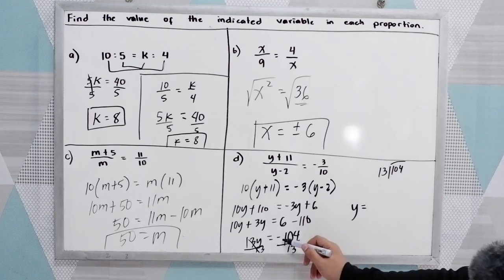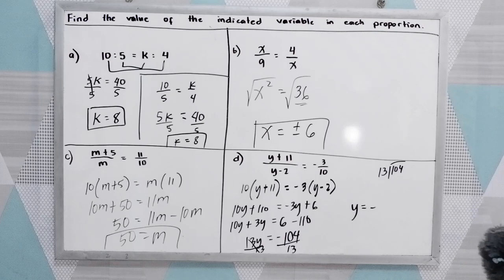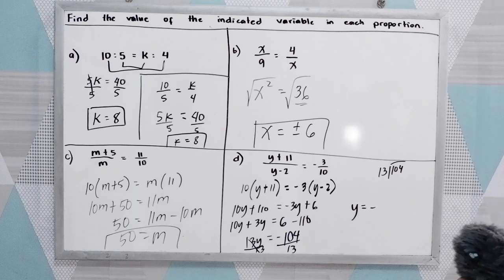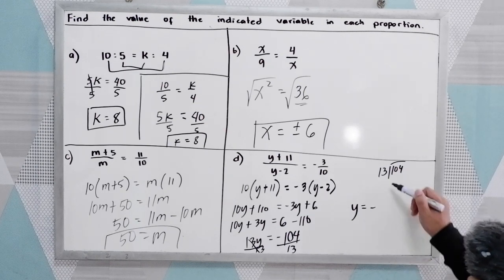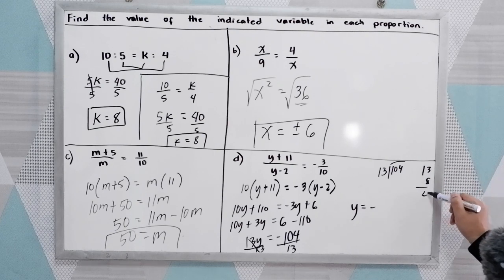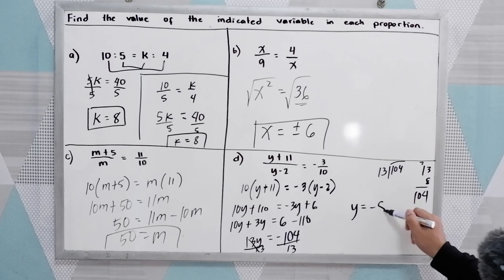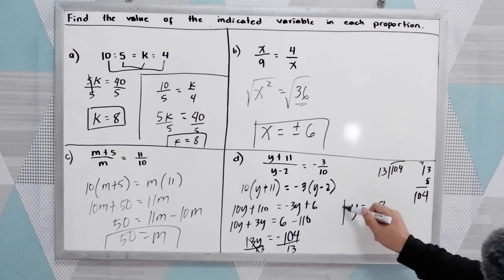Negative divided by positive gives a negative result. 13 times 8 equals 104, so Y equals negative 8. To check your answer, substitute the value of the unknown variables back into the proportion.